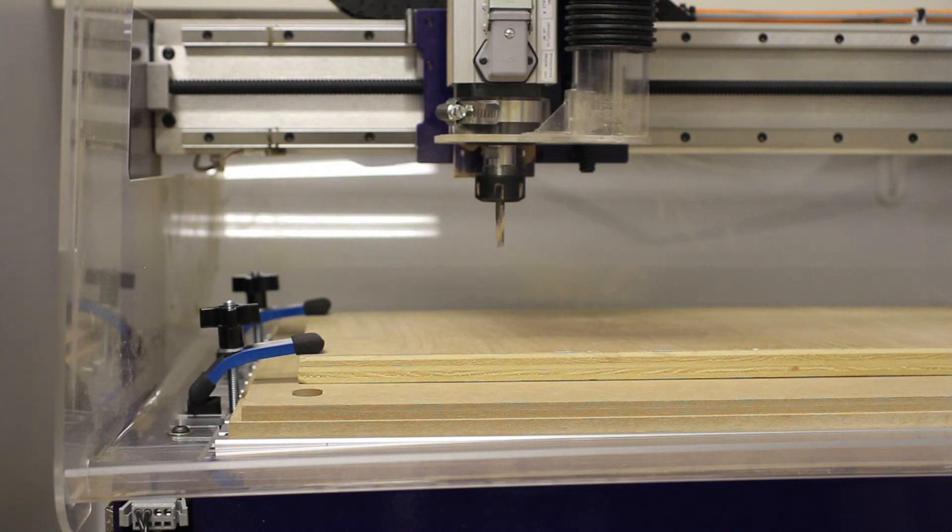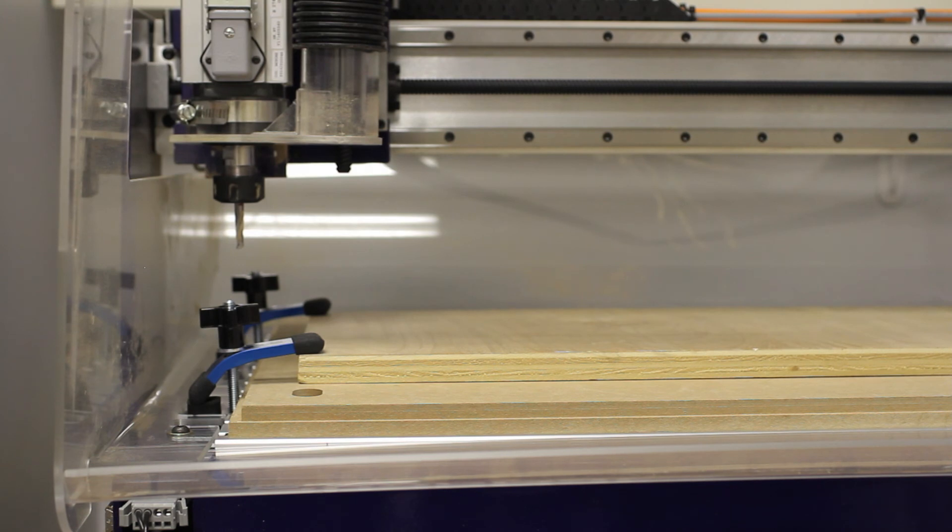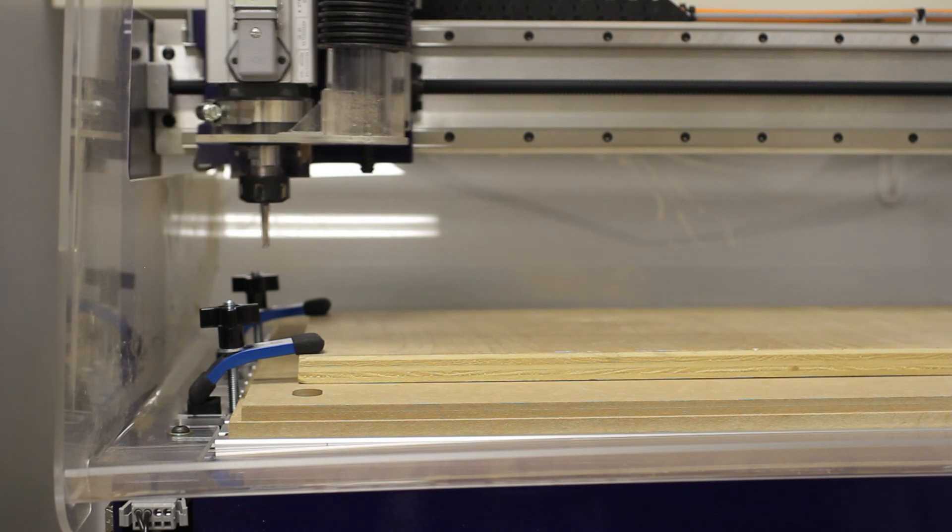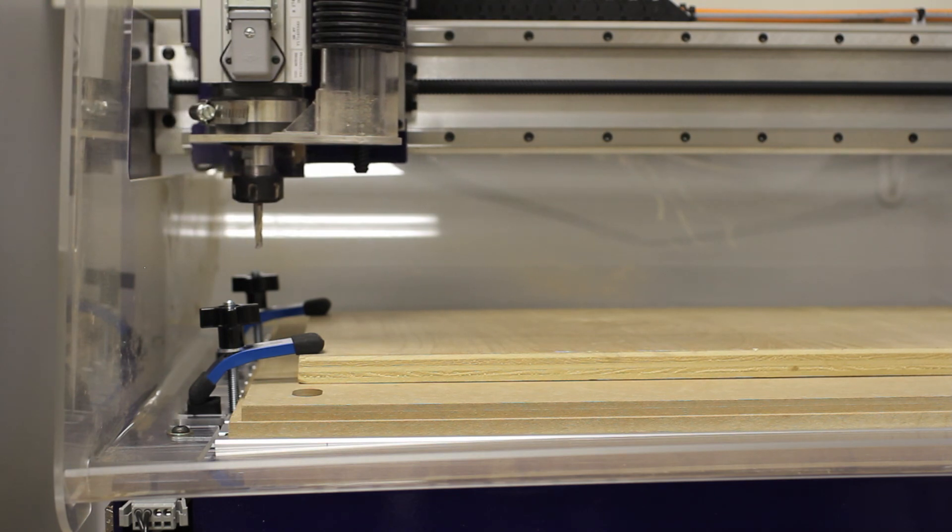What it's doing is driving the spindle over to the edge of the X and Y axes until it hits the ShopBot's built-in proximity switches, at which point it stops. It does this twice in both X and Y and now it knows where zero is in those axes.